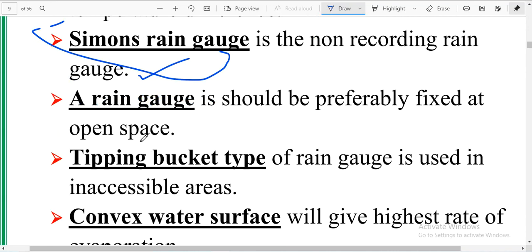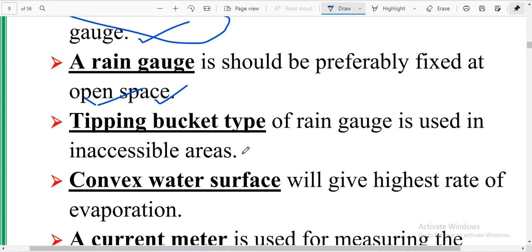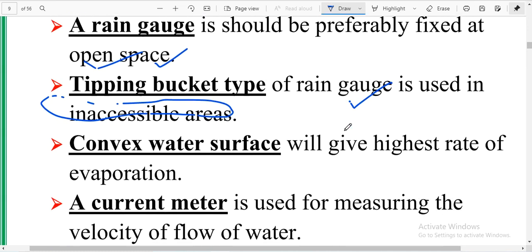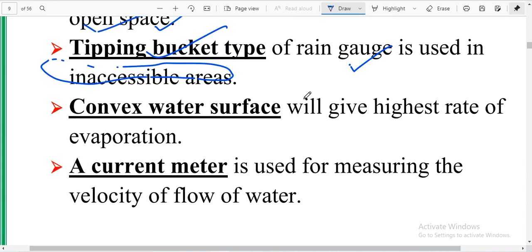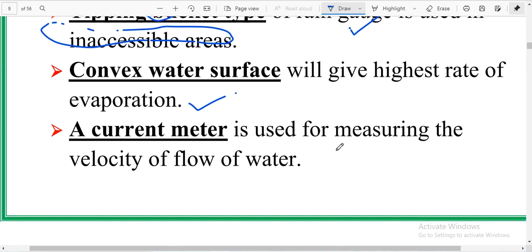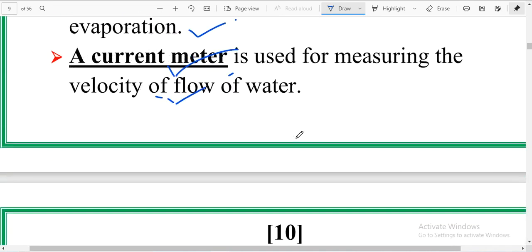Tipping bucket type of rain gauge is used in inaccessible areas. Convex water surface will give highest rate of evaporation. A current meter is used for measuring the velocity of flow of water.